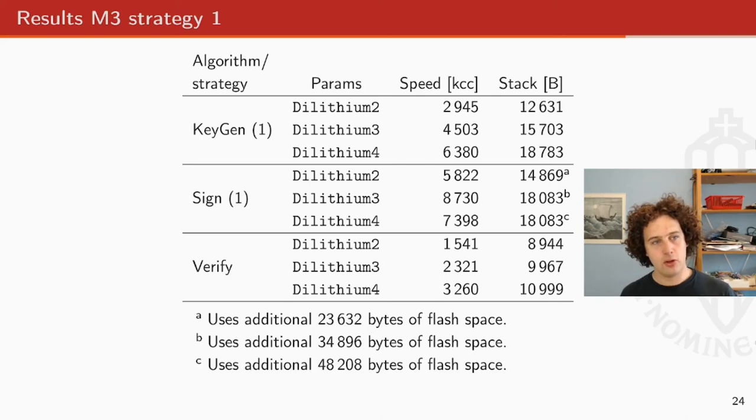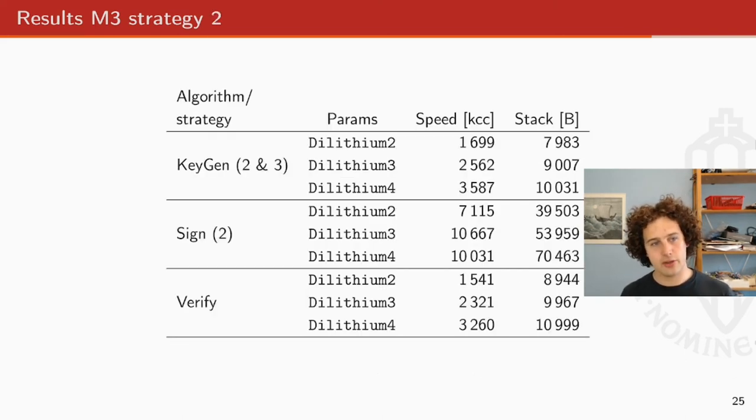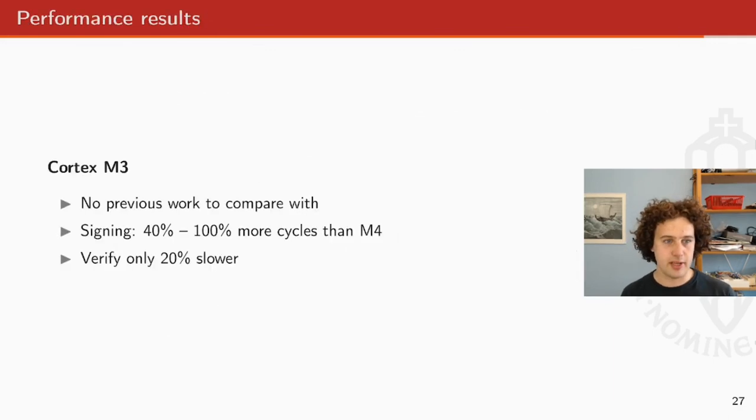For the M3, we don't have anything to compare to. So I presented the numbers here as is. We see that for signatures, the signatures are actually 40% to 100% more cycles than the M4. So that's a good guess if you want to estimate how slow this scheme would be on the Cortex M3. But we also see that verification is only 20% slower. And that is because we don't need in the verification, we don't need to use constant time operations. And so that means that the extra overhead that we get because we cannot use the 64 bit multiply operations is less, is lower.